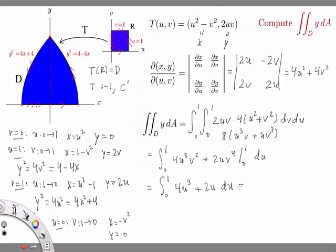So we have the integral 0 to 1 of 4u cubed plus 2u du. So again another simple integral to calculate. So this is just u to the fourth plus u squared evaluated 0 to 1 and I get 1 plus 1 which is equal to 2.